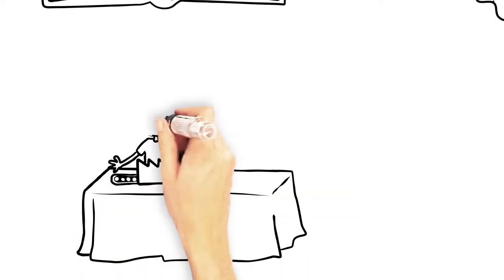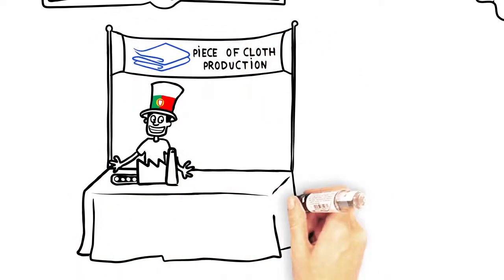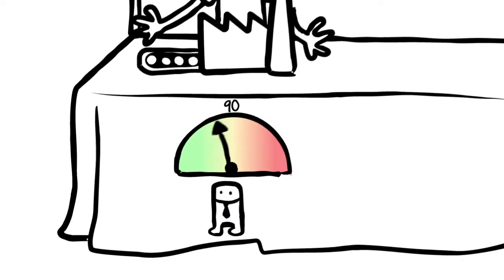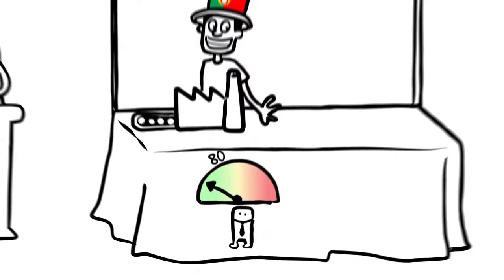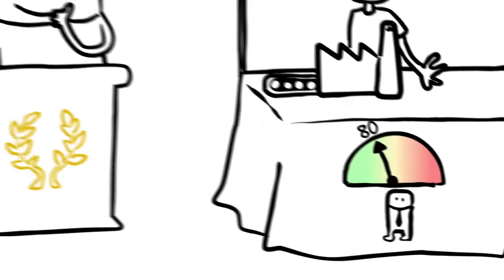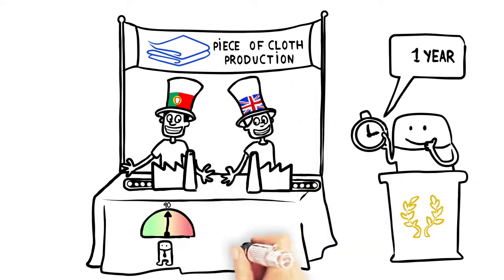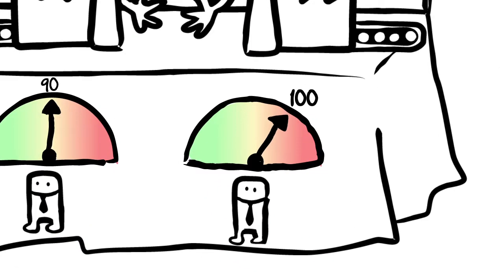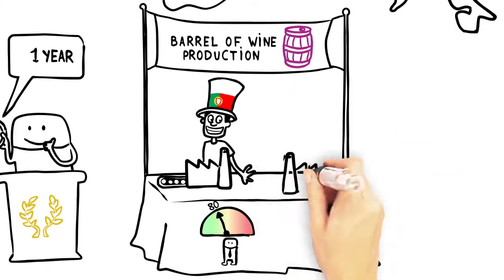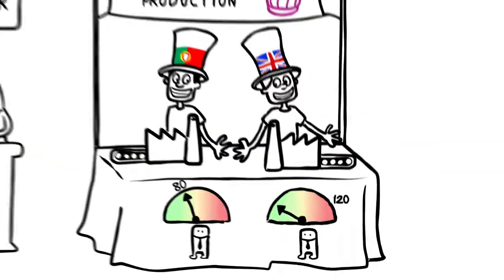For example, in Portugal, a piece of cloth requires the annual labor of 90 people, and a barrel of wine the annual labor of 80 people. In England, a piece of cloth requires the annual labor of 100 people, and a barrel of wine the annual labor of 120 people.